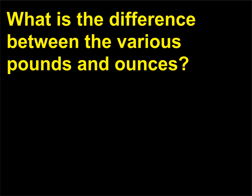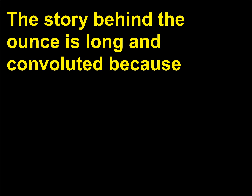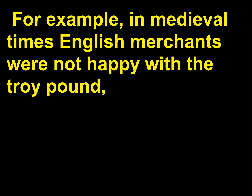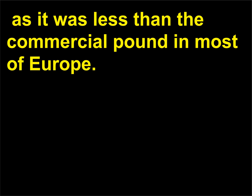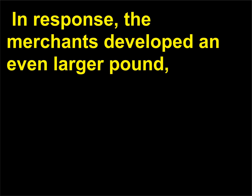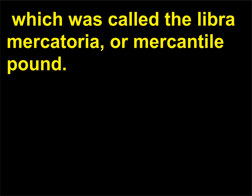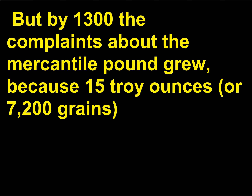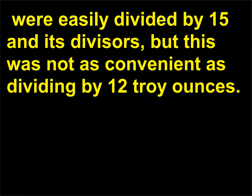What is the difference between the various pounds and ounces? The story behind the ounce is long and convoluted because historically people have been dissatisfied with the unit. For example, in medieval times English merchants were not happy with the troy pound, as it was less than the commercial pound in most of Europe. In response, the merchants developed an even larger pound called the Libra Mercatoria, or Mercantile Pound. But by 1300, complaints about the Mercantile Pound grew because 15 troy ounces, or 7,200 grains, were easily divided by 15 and its divisors, but this was not as convenient as dividing by 12 troy ounces.